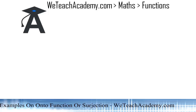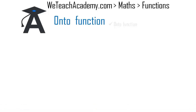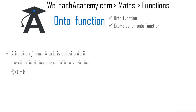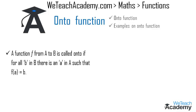Welcome to vdxacademy.com. In this presentation we are going to discuss onto functions. A function f from A to B is called an onto function if for all b in B there is an a in A such that f(a) equals b. Let us consider an example.